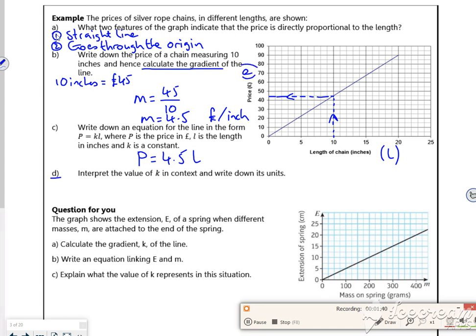So interpret the value of k in context. So it wants you to interpret the value of the gradient. So for every inch, what have we got? So it's changing y, we're changing x. So for every inch, there is an increase of £4.50 and the price. Does that make sense? Seems to, doesn't it?